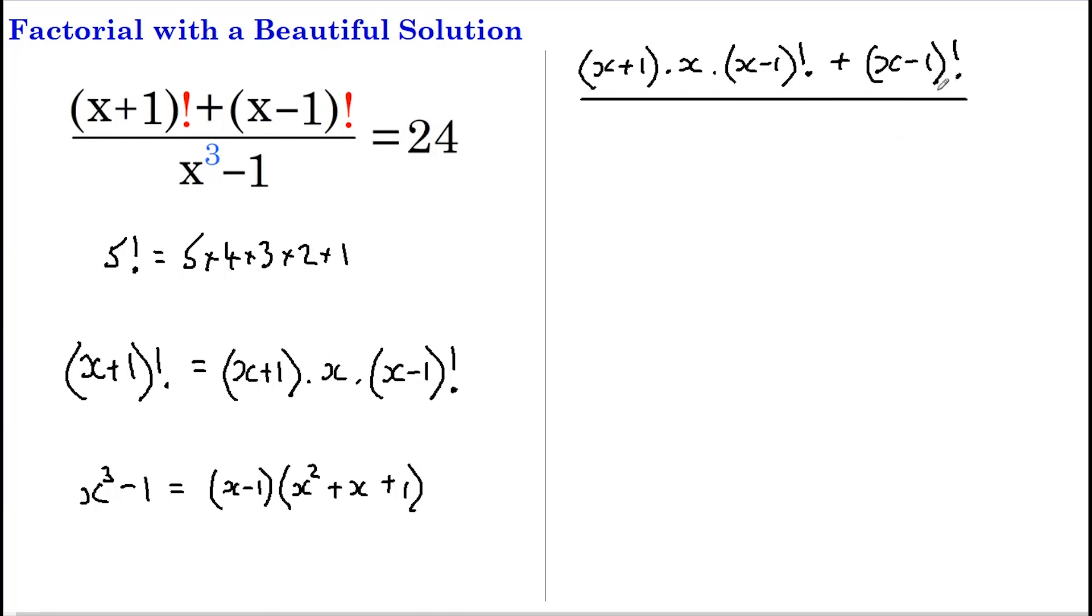And that's divided by x cubed minus 1, which is (x-1) multiplied by (x squared plus x plus 1), and this still of course equals 24.